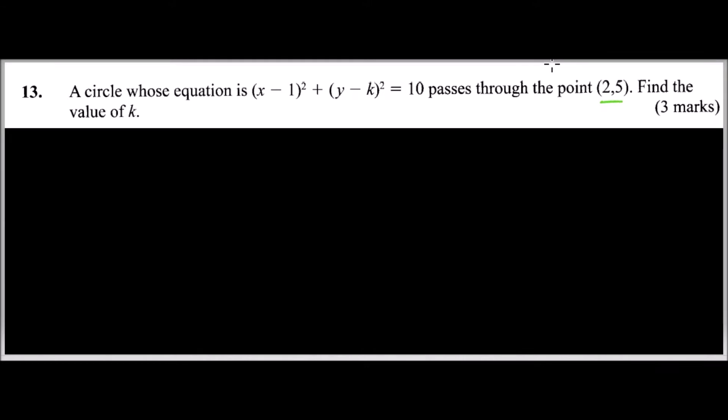Since our circle passes through this point, it means that we can replace the values of x which is 2 and value of y which is 5 in our equation. So we say x is 2, so it is (2 - 1)² and we replace 5 there, plus (5 - k)² equals 10.